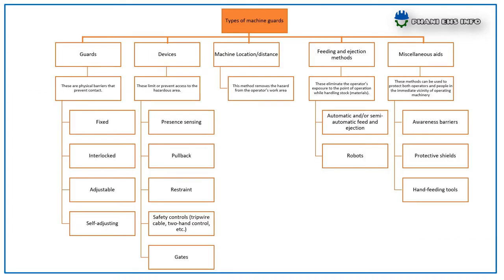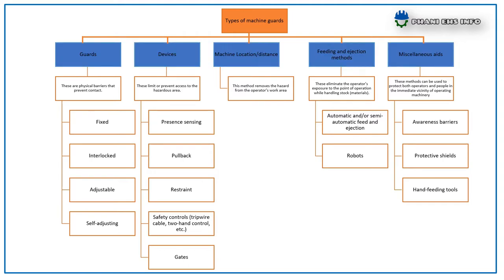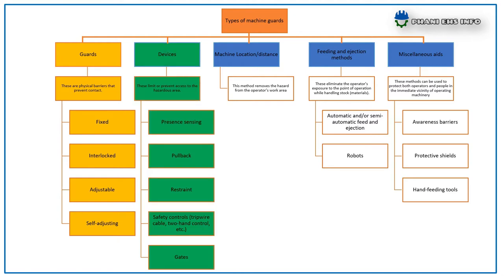The types of machine guards: there are mainly five types — guards, devices, machine location/distance, feeding and ejection methods, and miscellaneous aids. Guards are physical barriers that prevent contact; types include fixed guards, interlocked guards, adjustable guards, and self-adjusting guards. Devices limit or prevent access to the hazardous area; types include presence sensing, pullback, restraint, safety controls like tripwire, two-handed control, etc., and gates.